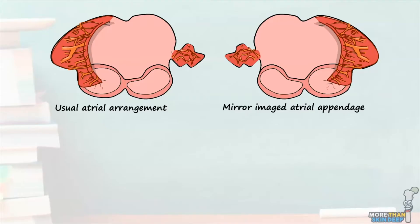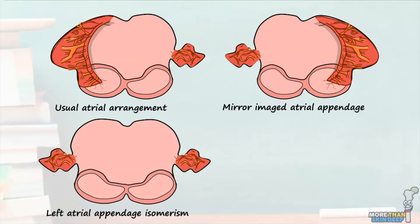Next we have left atrial appendage isomerism, where both atria are of left-type morphology with the left atrial appendages on both the left and right sides of the septum. The fourth and final atrial arrangement is right atrial appendage isomerism, where both atria are of right type with morphologically right atrial appendages on both the left and right sides of the septum.